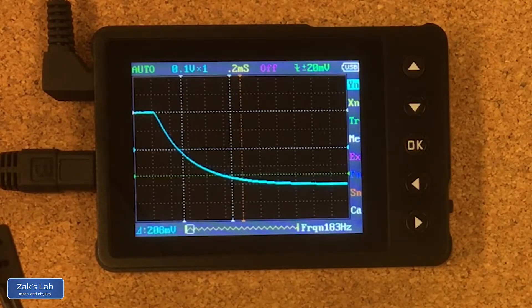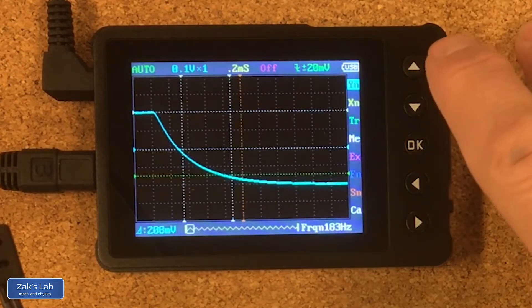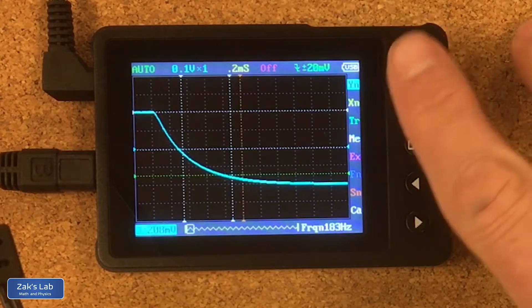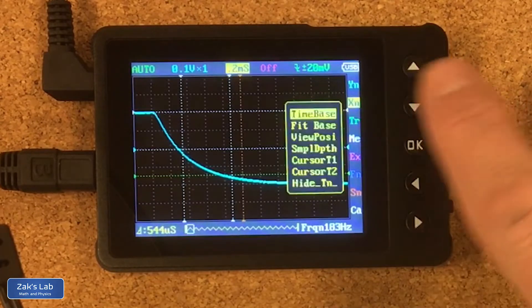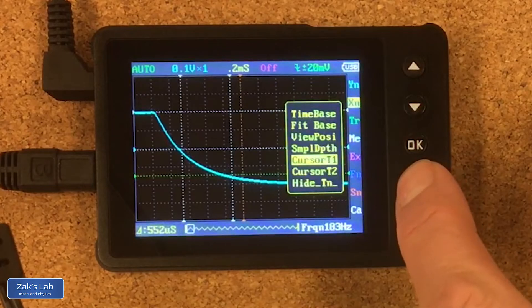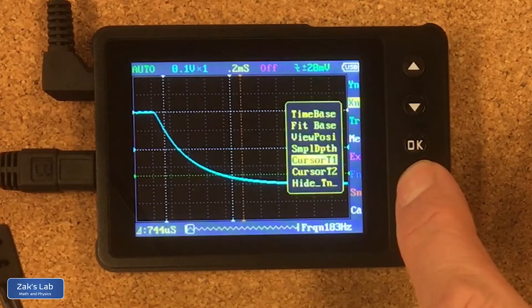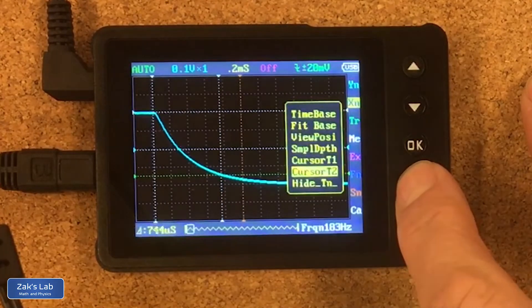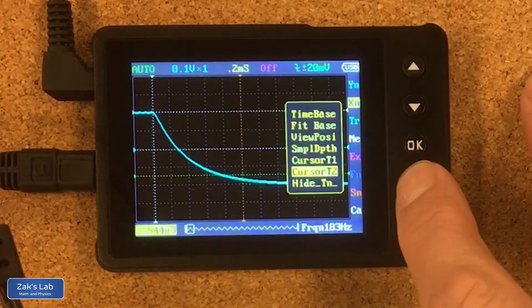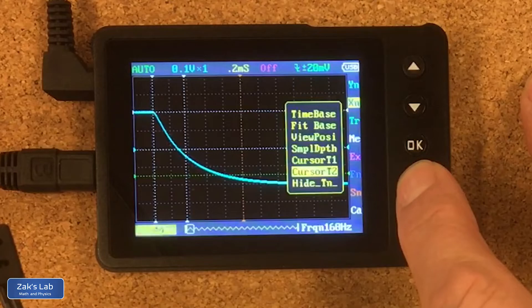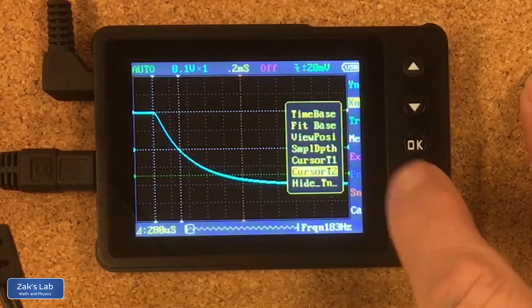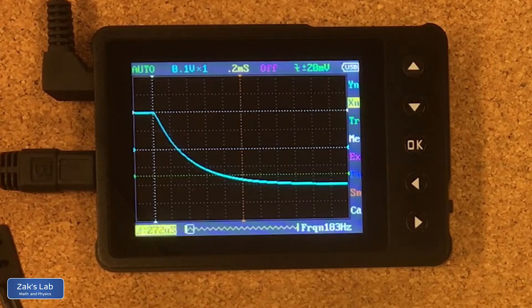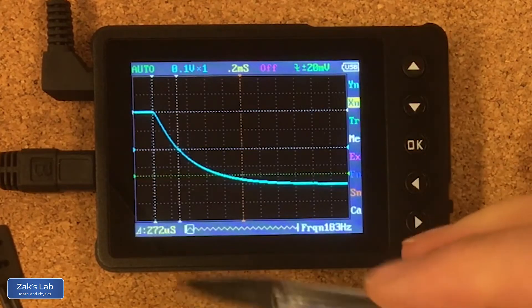We want to measure the time to get from the max value to half that, so we go to our X cursors. We move one of them to the moment that the decay first begins, then we move the second cursor to the point where the voltage and therefore the current through this resistor has dropped to half its original value. Now the difference between these two time cursors tells us the half-life for the decay, and that turns out to be 272 microseconds.